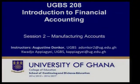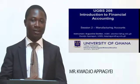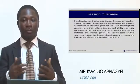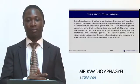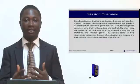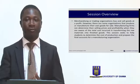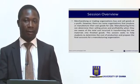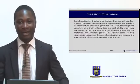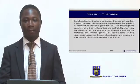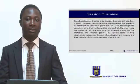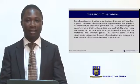Welcome to session 2 of UGBS 208 Introduction to Financial Accounting. In this section I will take you through Manufacturing Accounts. Our previous discussion will have been concentrating on trading organizations, which usually buy their final produce and sell it at a profit. However, some organizations are involved in the production of their own products, after which they would want to sell them — and that is what we refer to as manufacturing firms.